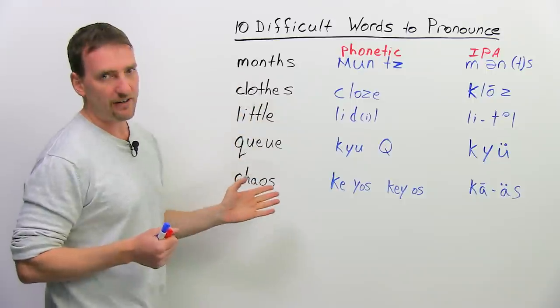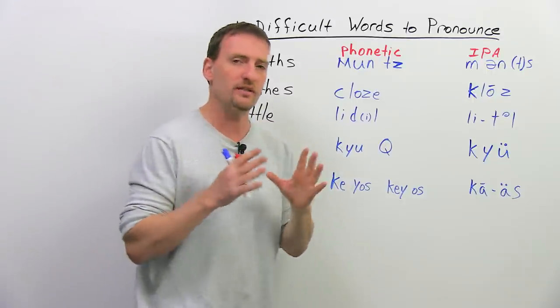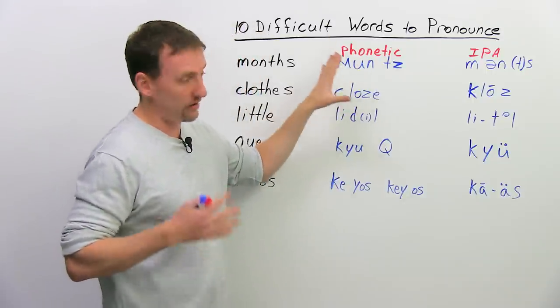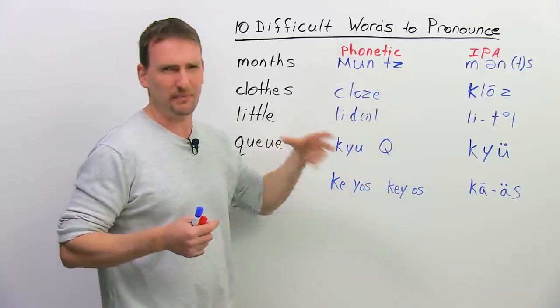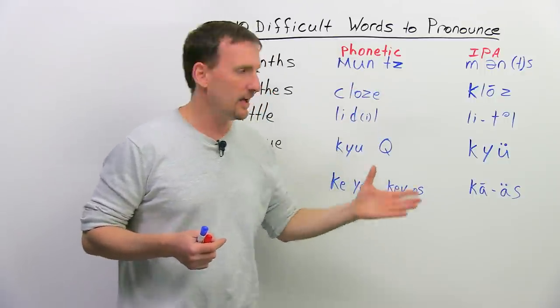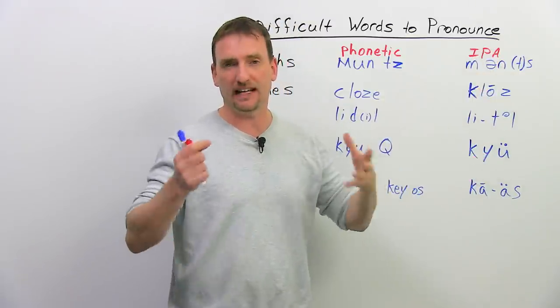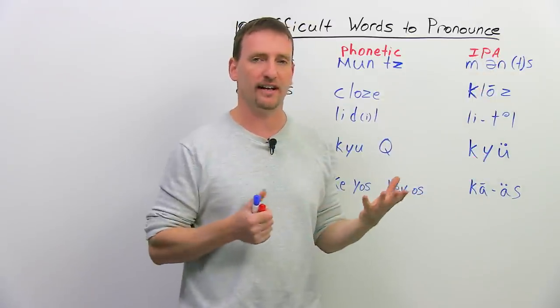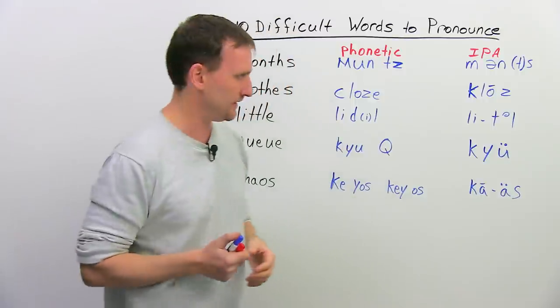We're going to look at the first five, and I'm going to show you two things, two ways to look at this word. One is the phonetic, basically just how does it sound. And two is looking at the actual phonetic alphabet to see how it's spelled according to the phonetic alphabet, and I'll talk to you about that as well.